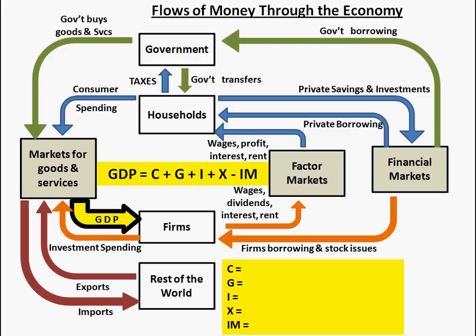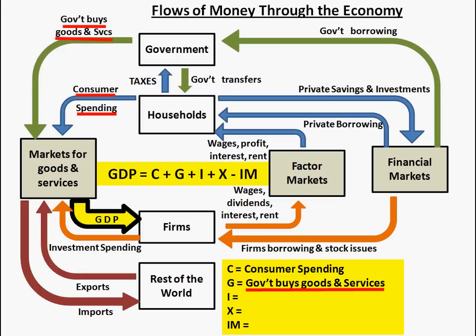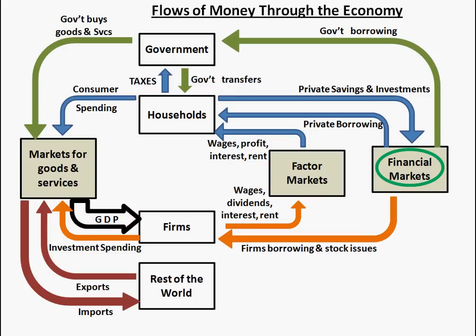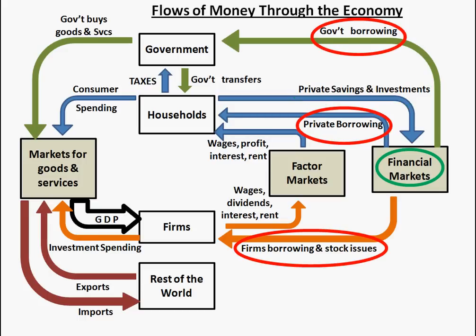The gross domestic product formula is: C plus G plus I plus X minus IM. C stands for consumer spending, G is government spending, I is investment spending from firms, X is exports, and IM — which we subtract — is imports. The financial markets take in money from private savings and investment, and pay out through government borrowing, private borrowing, and firms borrowing and stock issues. If there aren't sufficient funds, they take in money from foreign lenders and foreigners who purchase stock in our companies, while we also loan money to foreigners and buy stock in foreign companies.